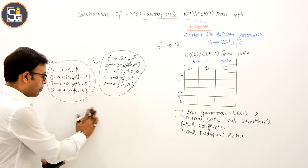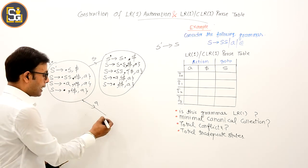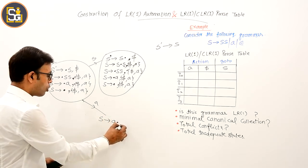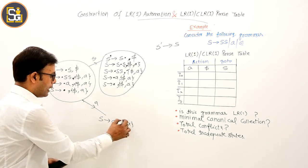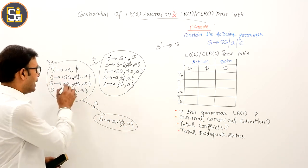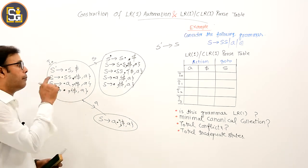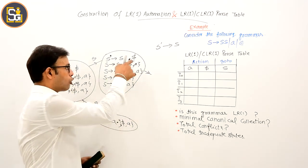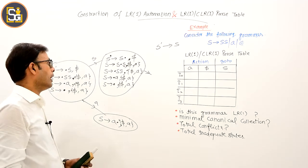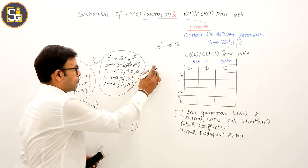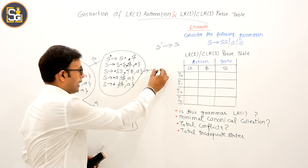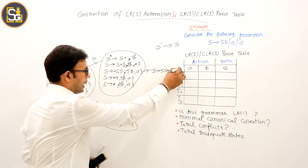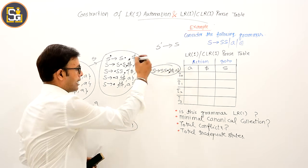A के transition में: S derives a dot, comma dollar/a — यह reduced item है, इसके लिए कोई closure देखने की जरूरत नहीं. दूसरे के लिए: S derives S dot, comma dollar/a — यह item बनेगा. यह state complete हो गई.